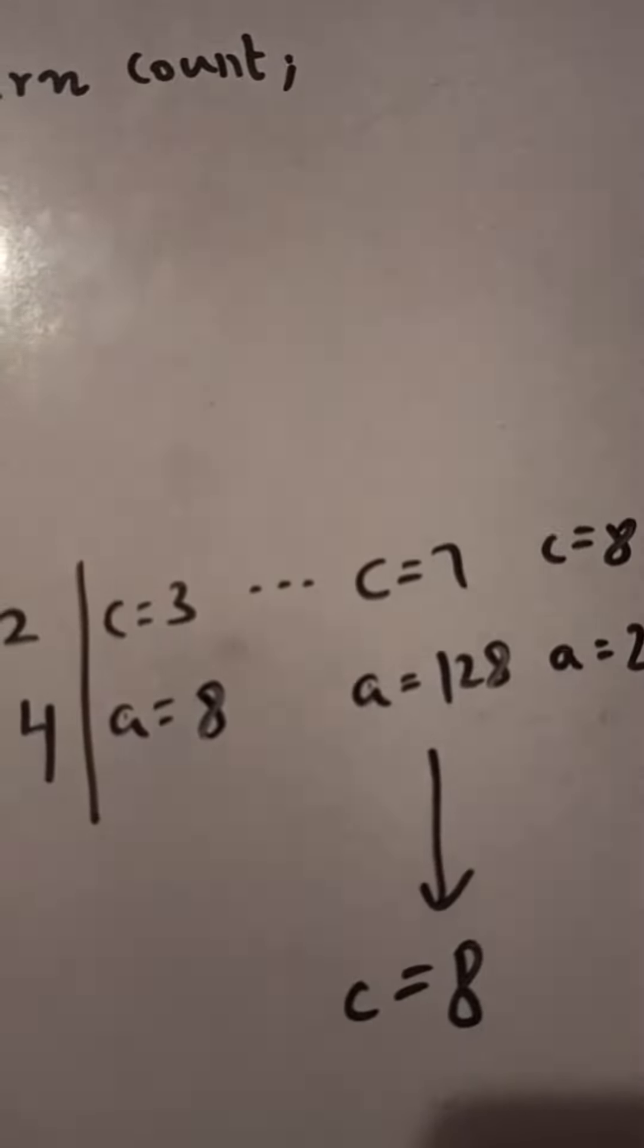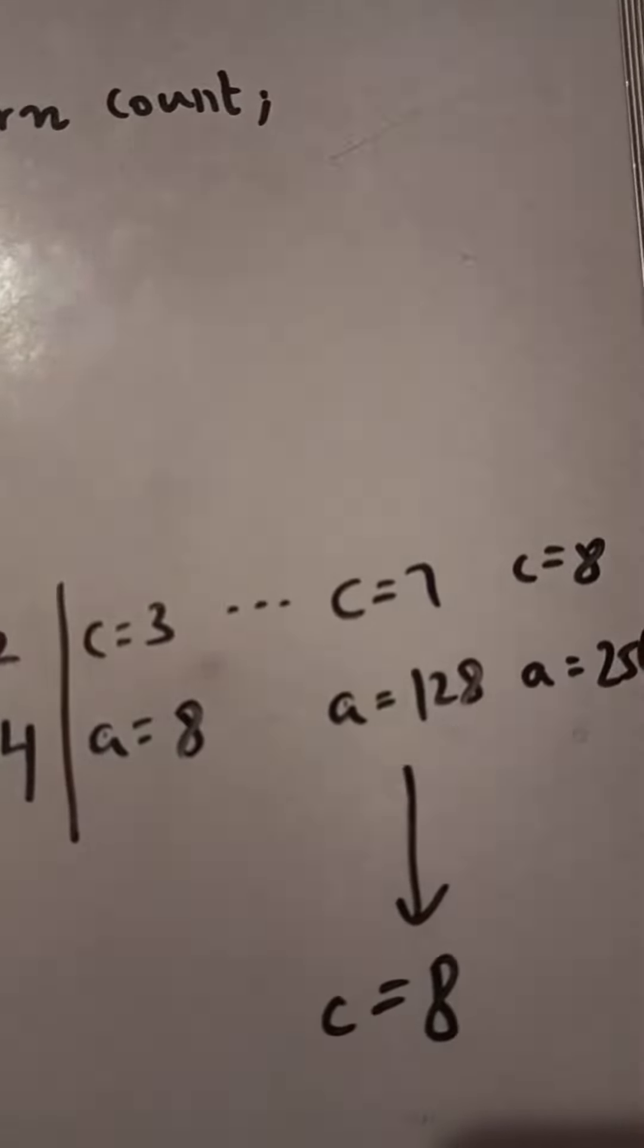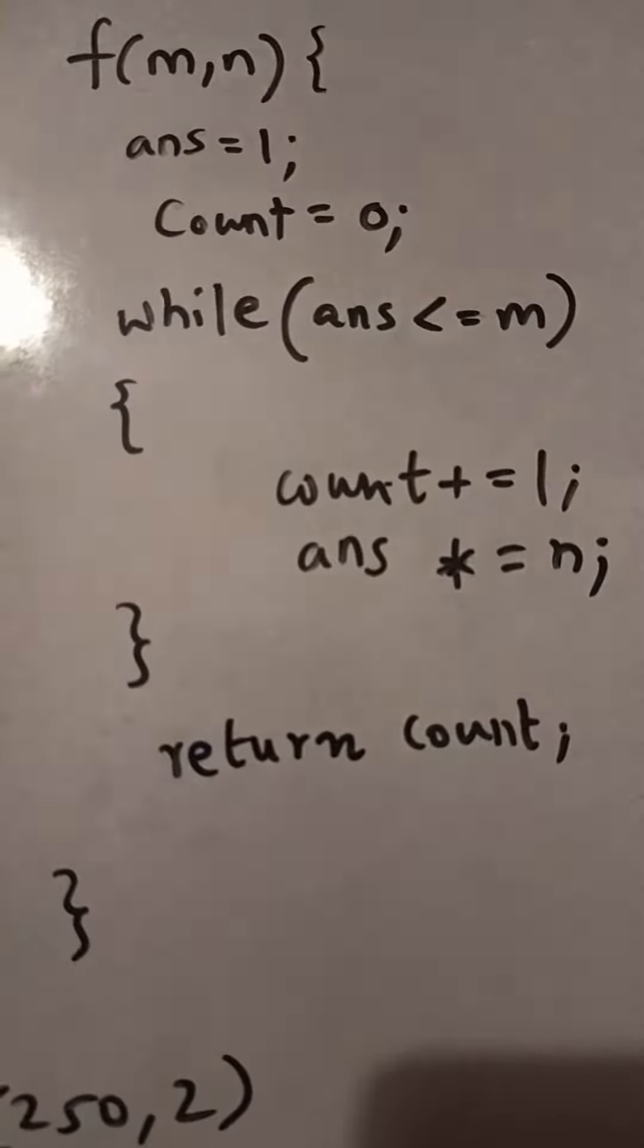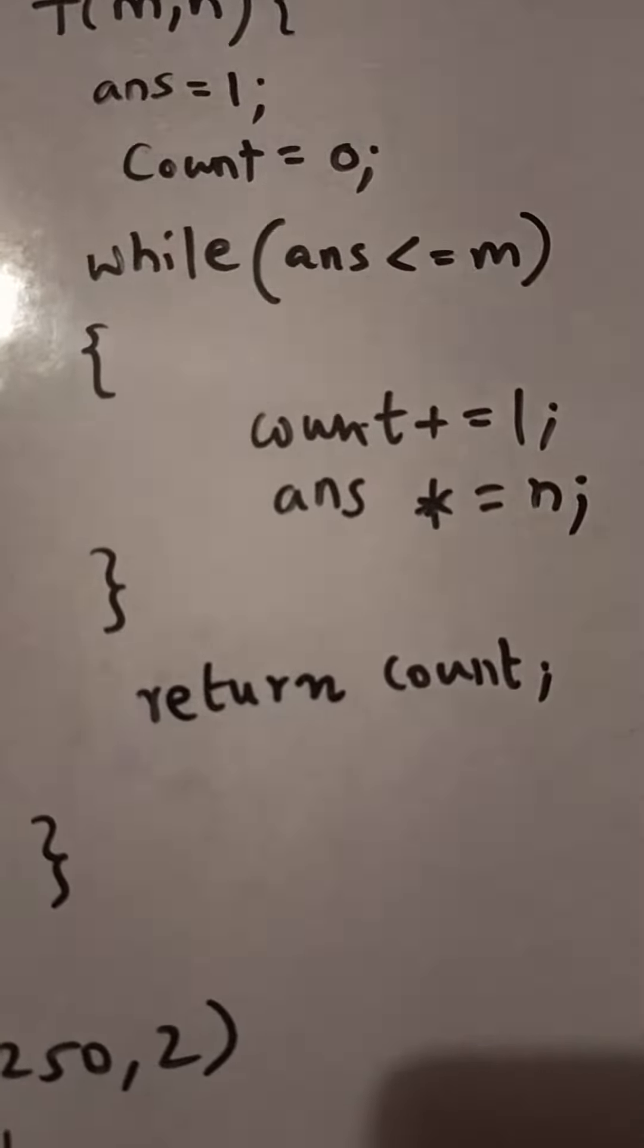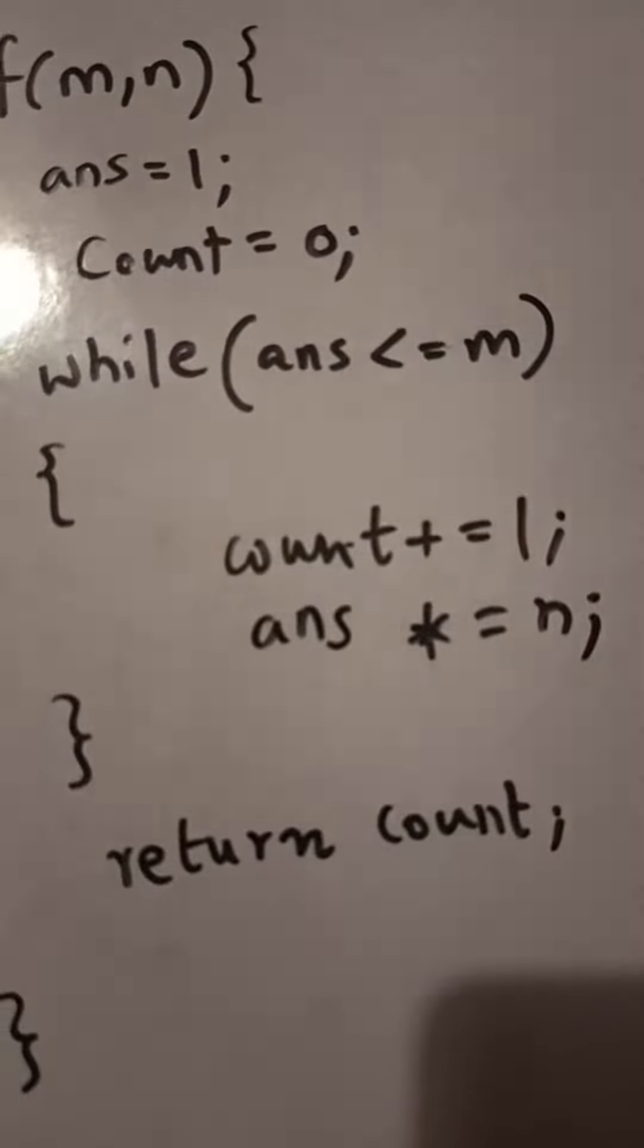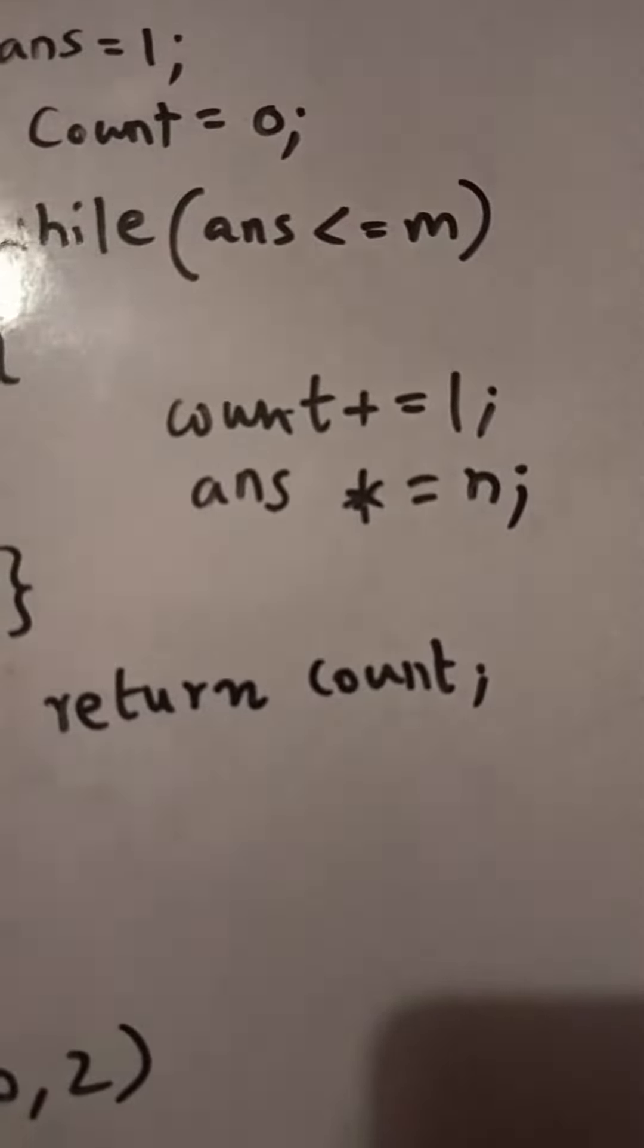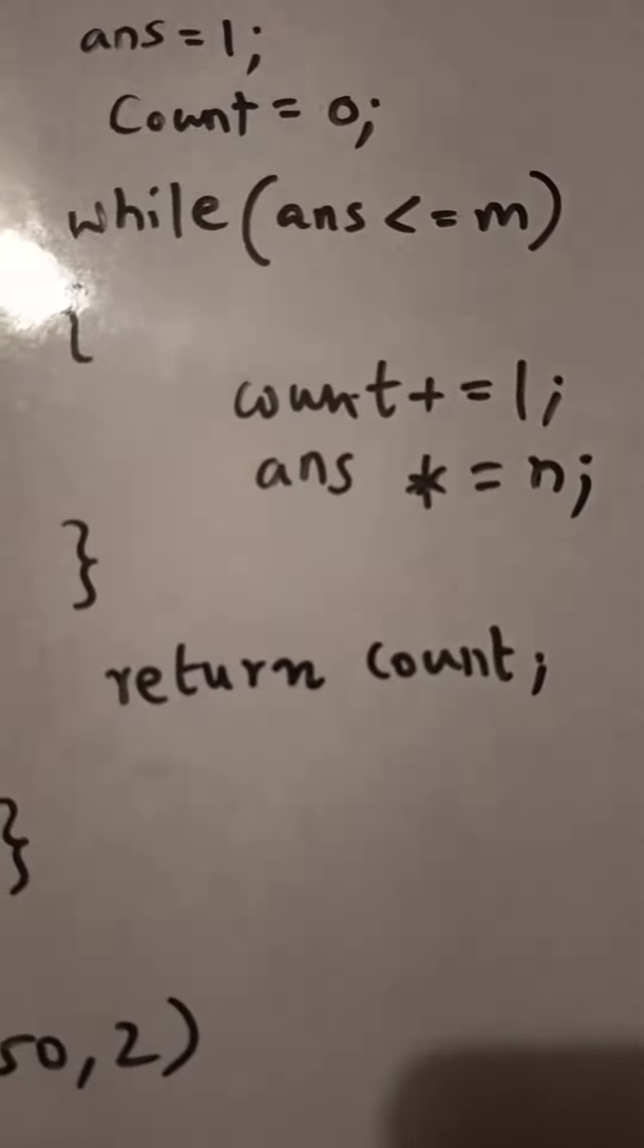When a is equal to 128, your c would be 7. Now 128 is less than 250, so you will go in the while loop once more. Increment the count to 8, and then answer will be 128 times 2, that is 256.